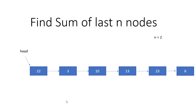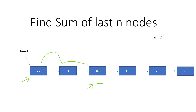So the approach is: first, whatever N is, start from the beginning of the list. In my case, N is 2, so I will start from here and iterate two times. After two iterations, I will be at this node. Now I will again start from the beginning, so I have one pointer here and one pointer at the start, and simultaneously I will keep on iterating both items one by one.